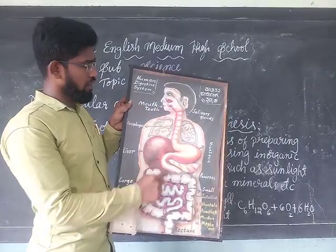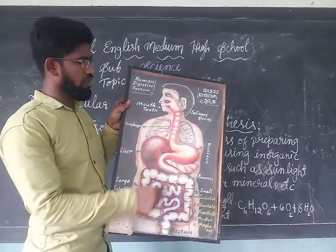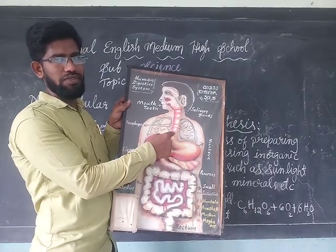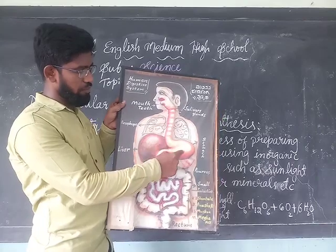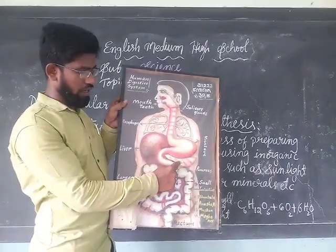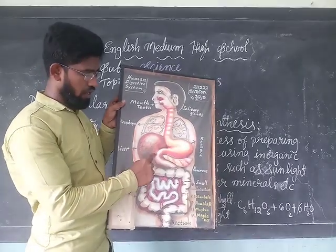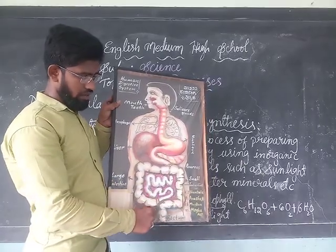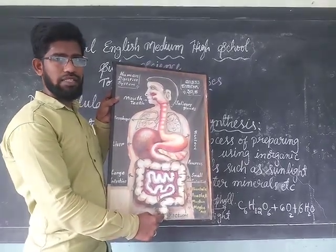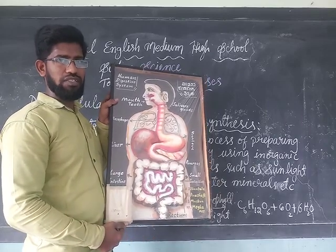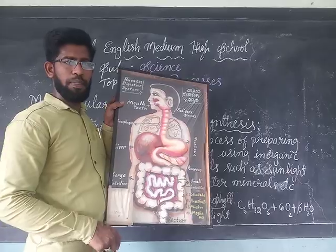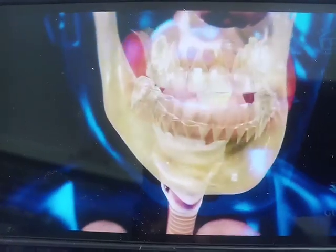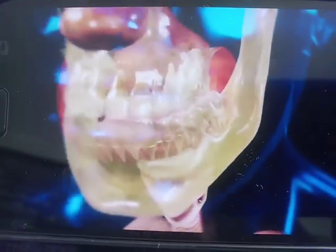The digestive system of human beings starts from the mouth cavity, followed by the epiglottis situated in the throat region, then the esophagus (food pipe), stomach, pancreas, liver, small intestine, large intestine, rectum, and anus with the anal sphincter, through which undigested food is released. Digestion involves the following steps: ingestion, digestion, assimilation, absorption, and egestion.